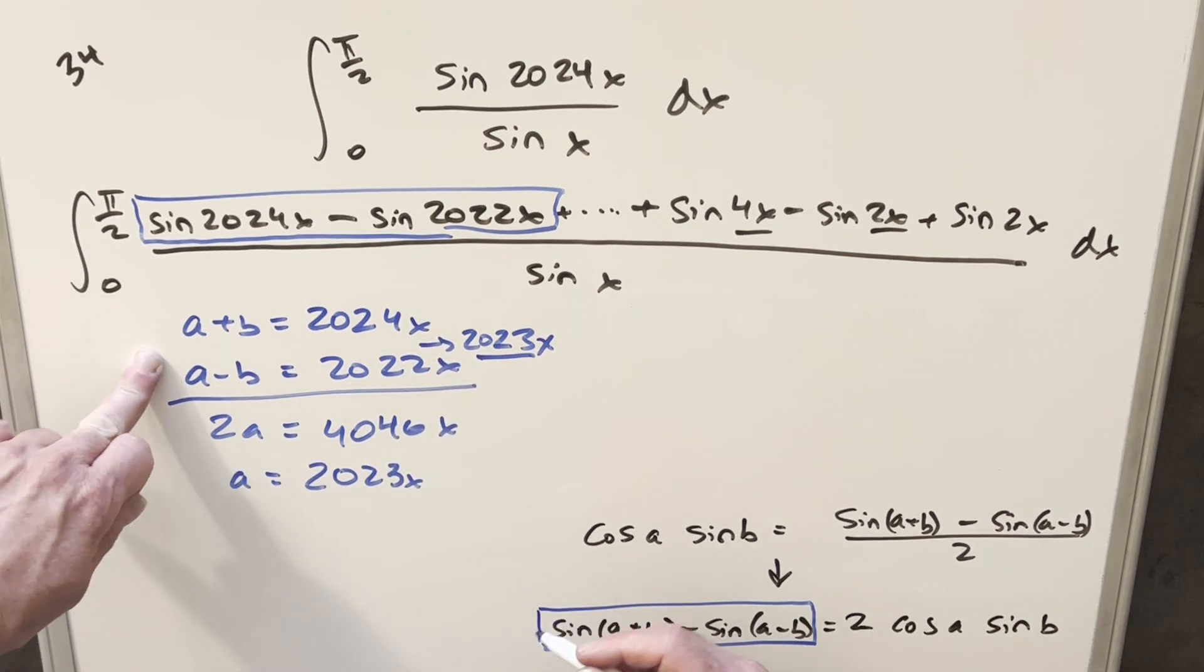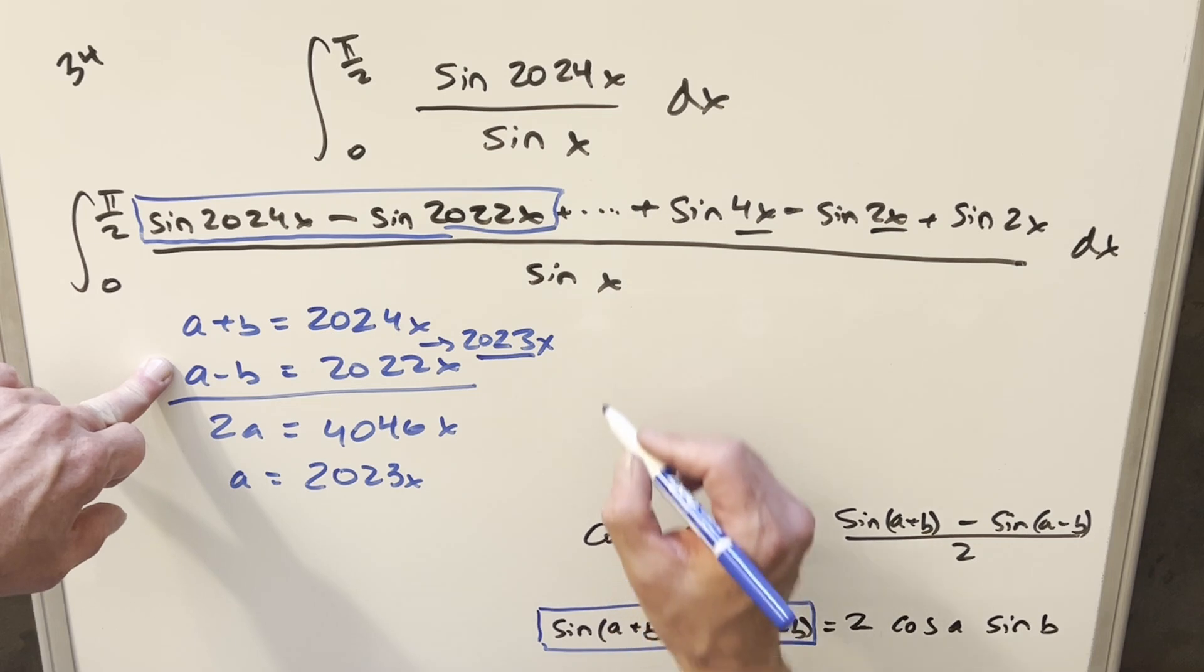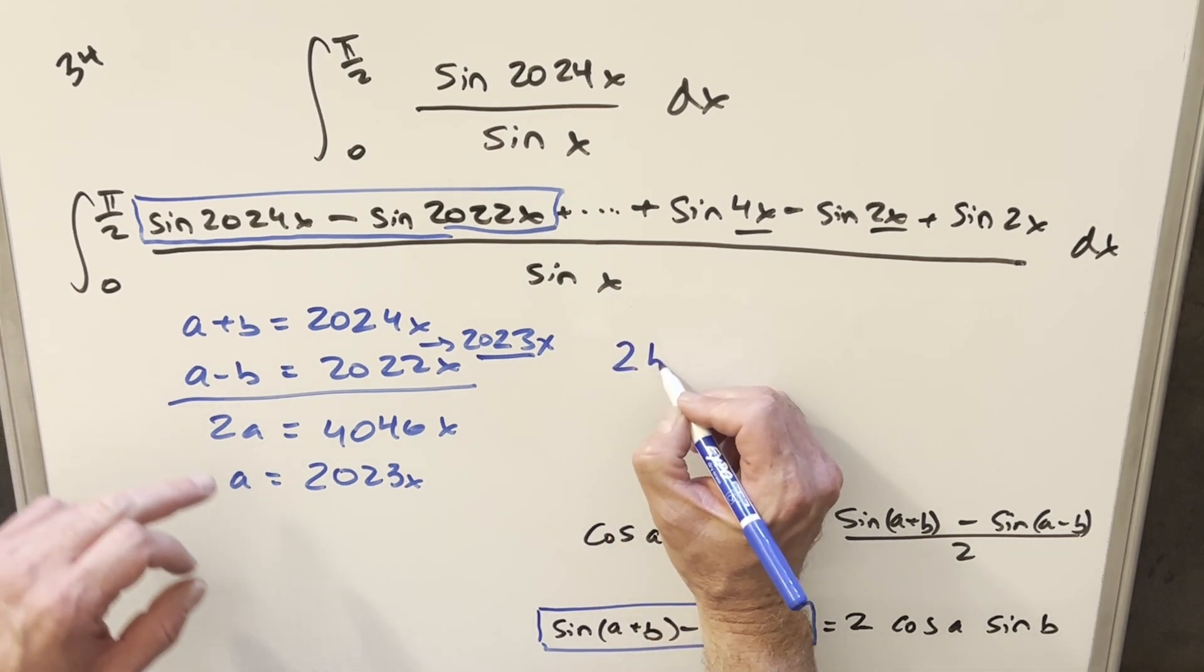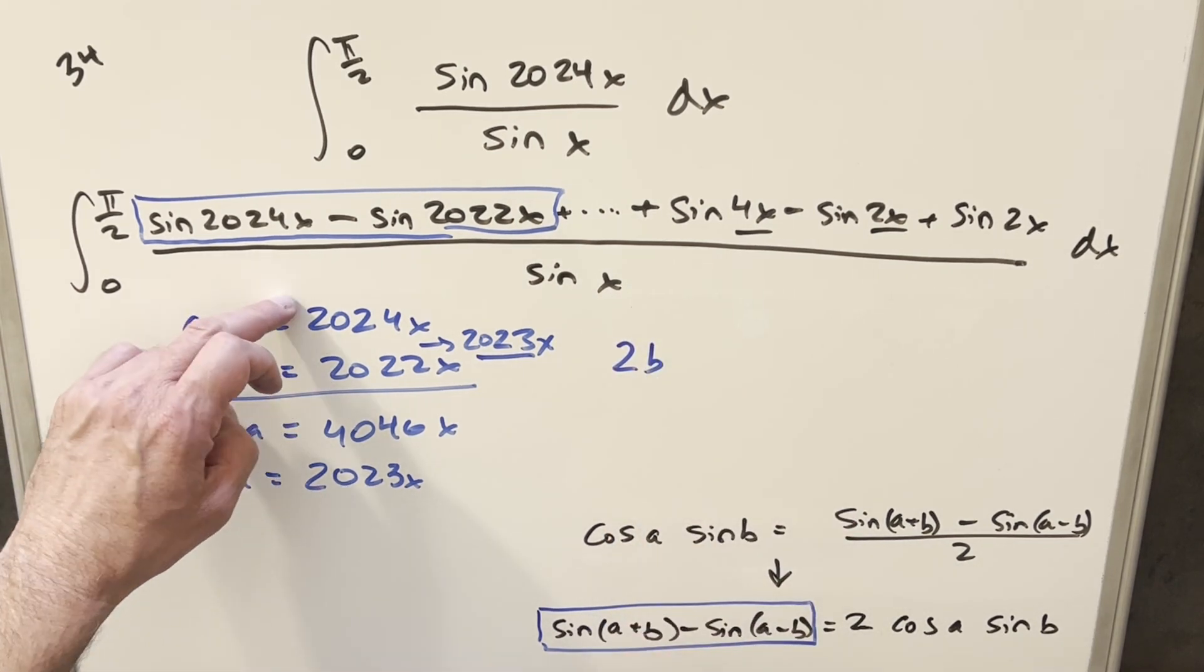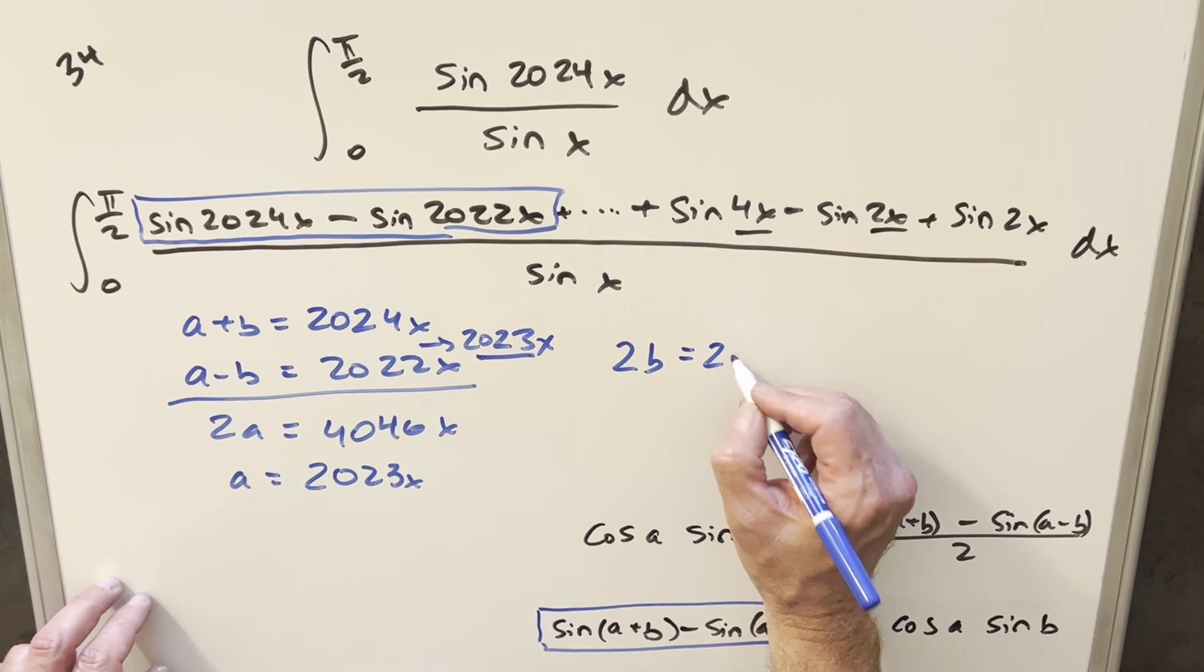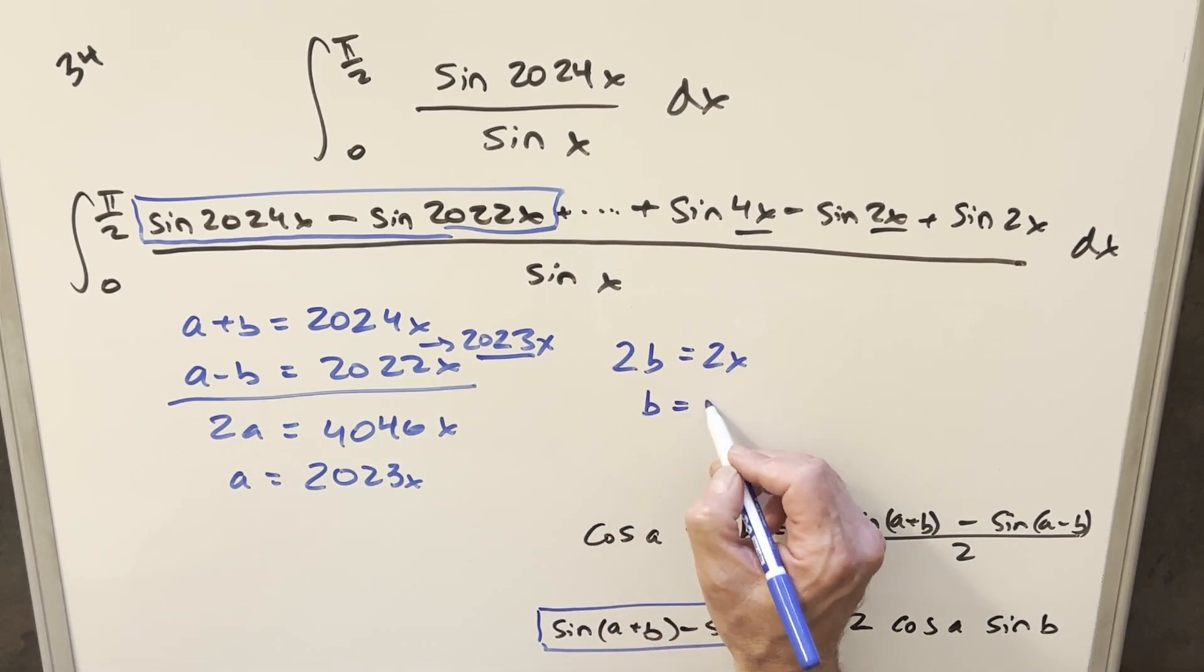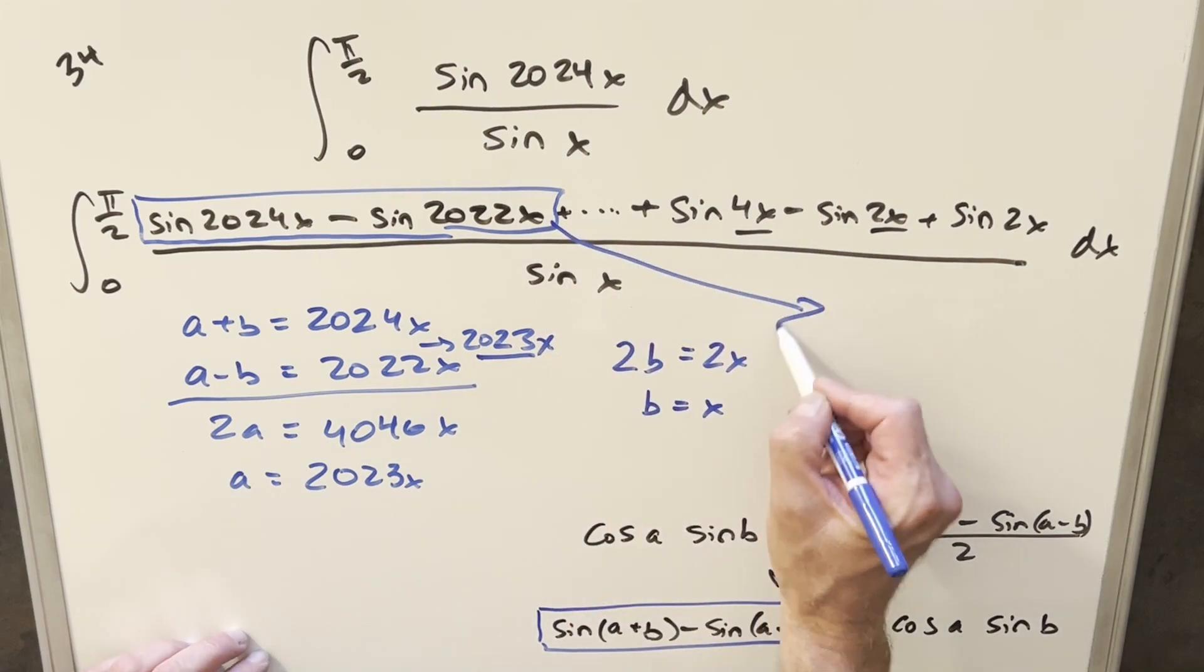And then if we subtract these two, we can get our b value because the a's are going to cancel out. So doing that, we're going to get 2b, subtracting 2022 from 2024, this is 2x. Then solving for b, we get b is equal to x.